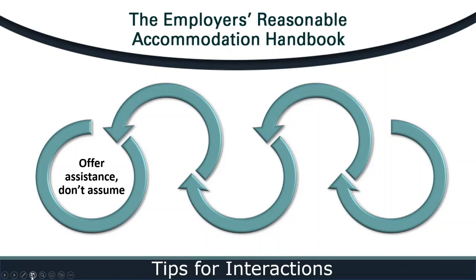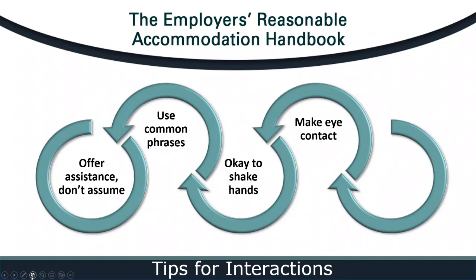It's okay to offer assistance, but don't assume the individual needs it. When having conversations with colleagues, common phrases like 'let's walk and talk' are okay to use. It is also okay to shake a prosthetic hand. Or, if a colleague is unable to shake with their right hand, shake their left hand. If a person is unable to shake hands, you could touch their arm or shoulder when you meet them. Also, when interacting with a person who has a cosmetic disfigurement, make eye contact as you would with all your colleagues. A person's disability or a medication they take might make it difficult for them to show enthusiasm, so don't assume someone is not interested simply because it is not obvious.